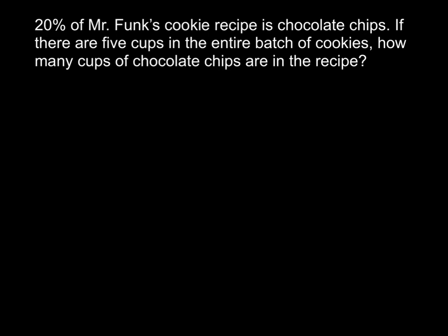When we look at this, we want to start with our three-word sentence, and to do that, a strategy you might use is to underline the information that you have to have. Here, that's going to be 20%, and that's going to be five cups — of the cookie recipe. So to write that sentence, all we need to do is say: 20% of five cups.